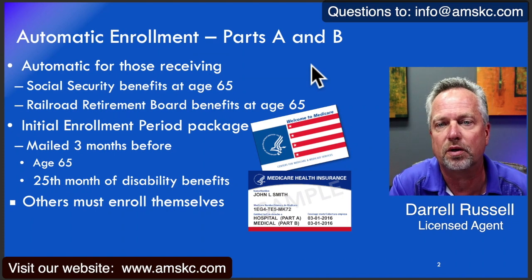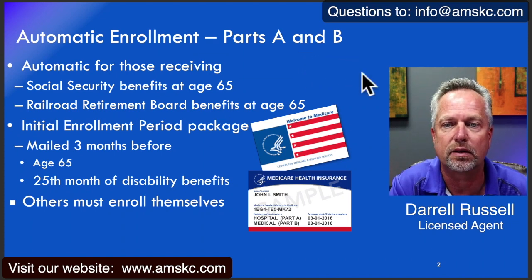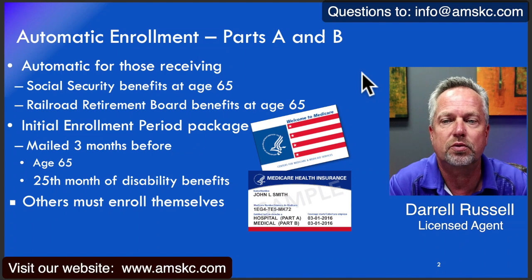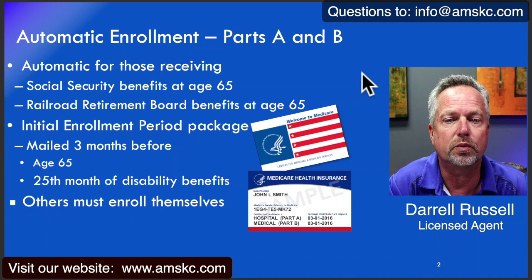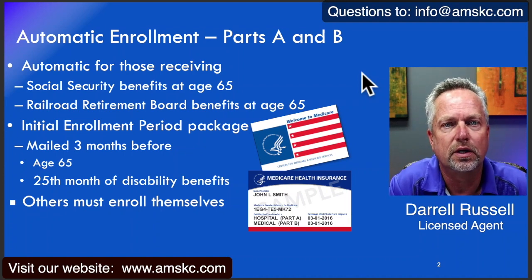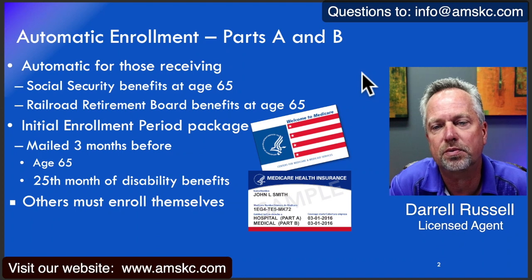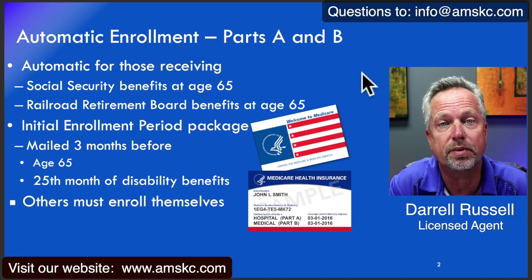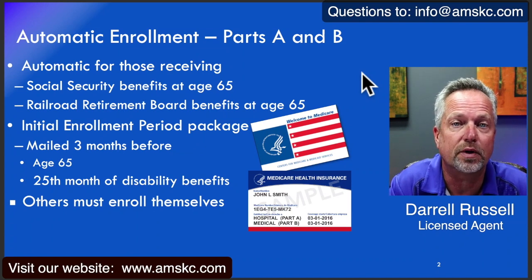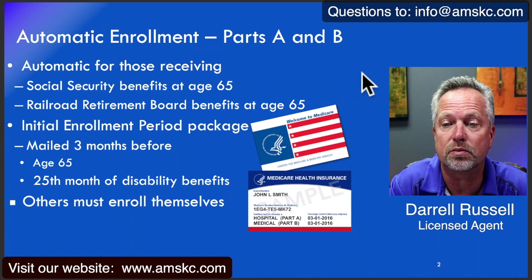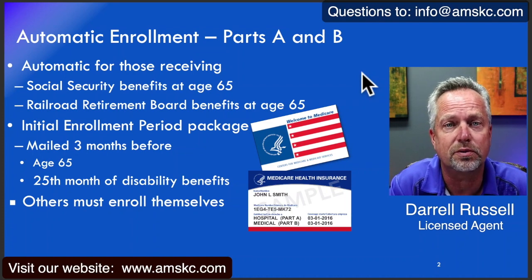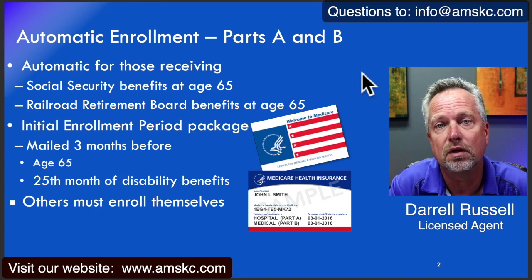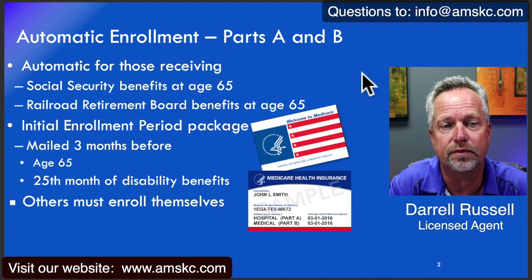First of all, for some people, enrollment into Medicare A and B is automatic, and it is automatic for those who are receiving their Social Security benefits at age 65 or their Railroad Retirement Board benefits at age 65. So if those apply to you, approximately three months before the month you turn 65 you'll receive an initial enrollment period package directly from CMS, the federal agency that manages the Medicare program. This also includes people who are drawing Social Security due to disability but are under 65 — you'll get that on the 25th month of disability benefits.